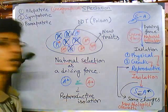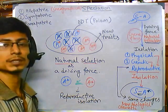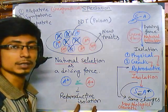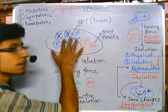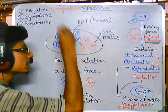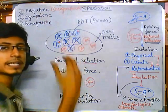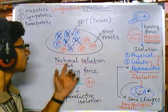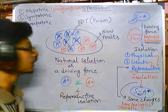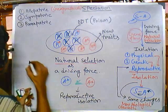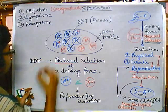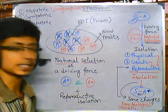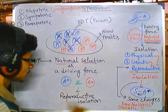It is not always required for two species or members of a species to be geographically isolated in order to achieve reproductive isolation. These members are present in the same region, yet they can gain reproductive isolation simply due to the driving force of natural selection — in this case, the selection pressure provided by DDT.